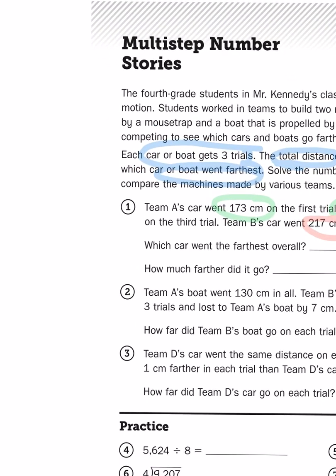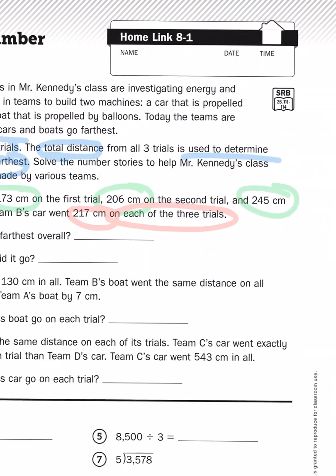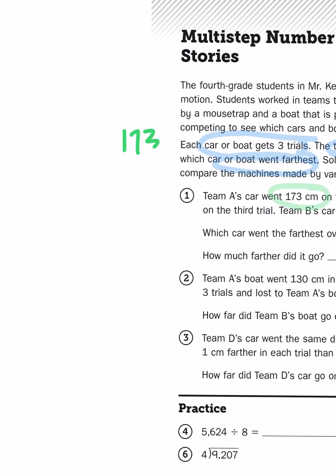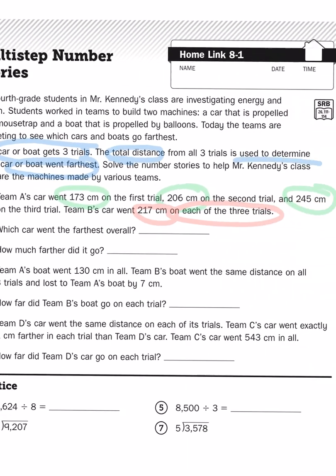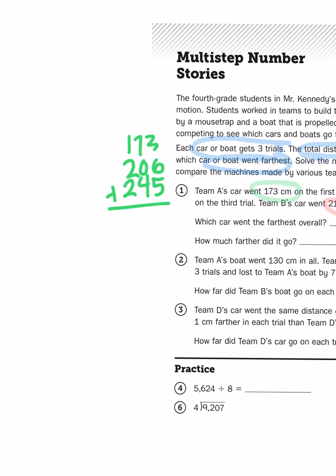I need to set up an addition problem. So, I'm going to add 173 to 206, and I'm going to add that to 245. Since I lined up my numbers in place value order, I just go down each column. 3 plus 6 is 9, 9 plus 5 is 14.